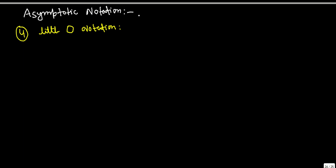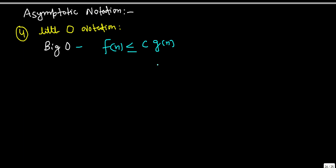Hello everyone. In this tutorial we will be discussing two more notations. The first is little-o notation, which is almost similar to Big-O notation, but with a small difference. In Big-O, we have seen that f should always be less than or equal to a constant multiplied by g(n), and this g(n) is an upper bound on the function f(n).